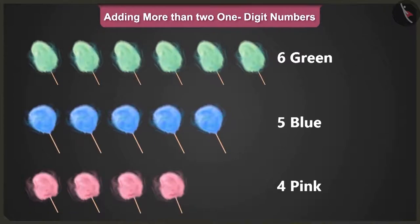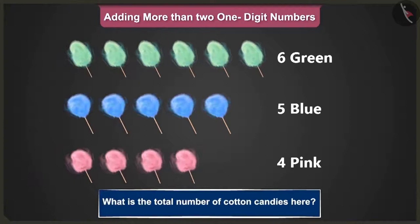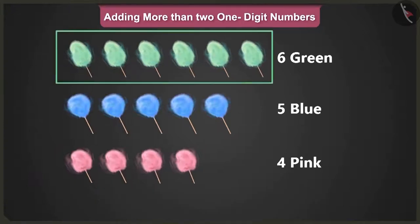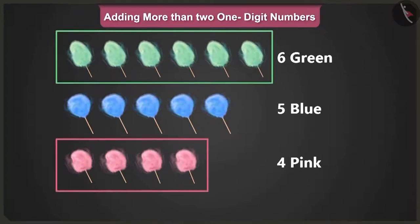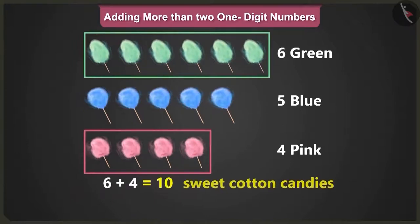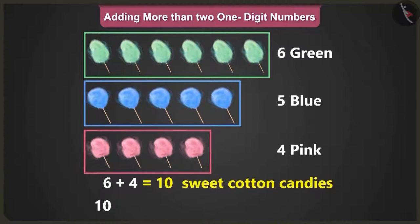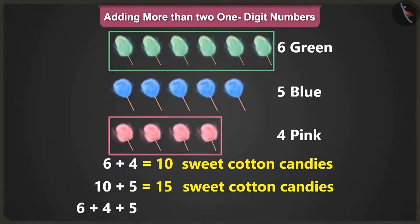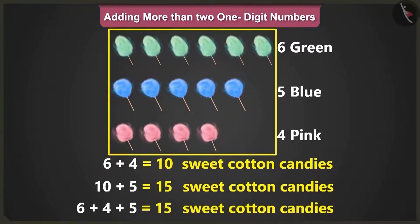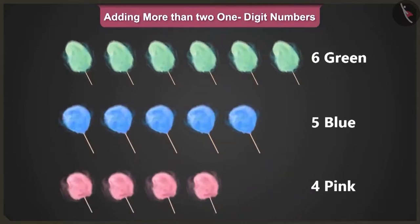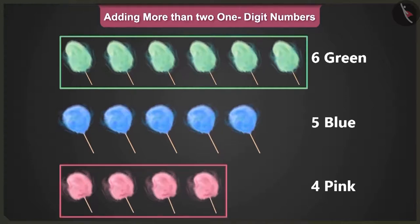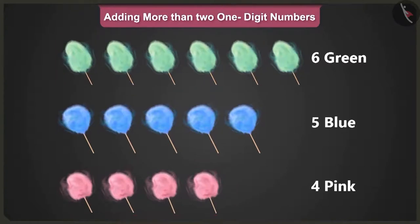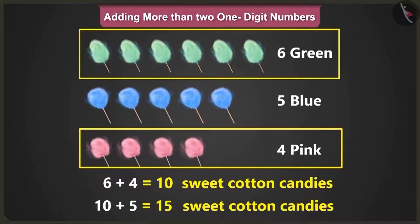Well done, Pilloo. Now tell me, what is the total number of cotton candies here? I will add up the number of green and pink sweet cotton candies first. So six and four makes ten sweet cotton candies. Now, to this ten, add the number of blue candies, that is five, which makes it fifteen. So when we add six, four and five, we will get a total of fifteen cotton candies. Well done, Pilloo. But tell me, why did you first add the number of green and pink cotton candies? Because I remember that in addition, those numbers that add up to ten, if added first, can make the addition of more than two one-digit numbers easier.